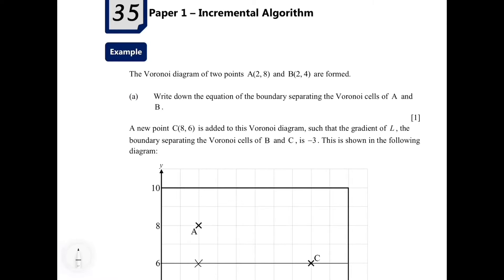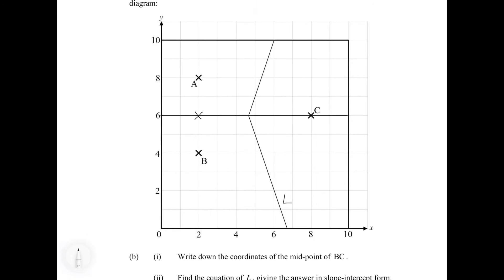Now let's look at the next part. We have a new point C with coordinates (8, 6) added to this Voronoi diagram, where L is the boundary separating the Voronoi cells of B and C. We are given that the gradient of L equals negative 3. L is the boundary separating the Voronoi cells of B and C, with gradient negative 3, and it passes through the midpoint of BC, which is (5, 5). After these two new boundaries are inserted into the diagram, we amend the length of the original boundary separating the Voronoi cells of A and B — this is the result of the incremental algorithm.